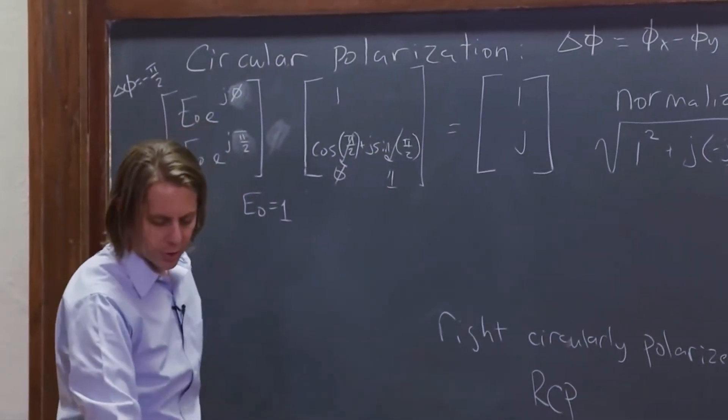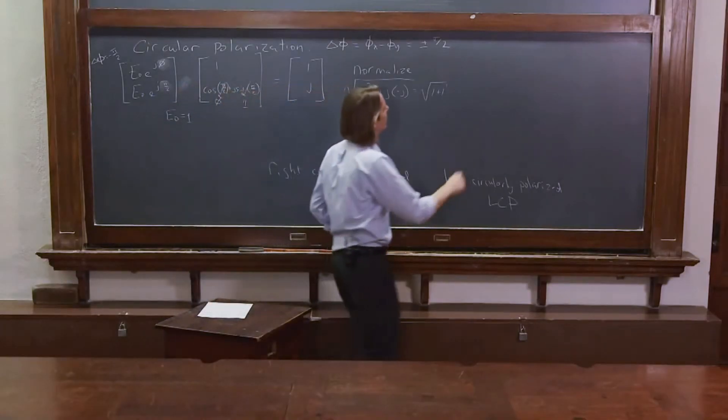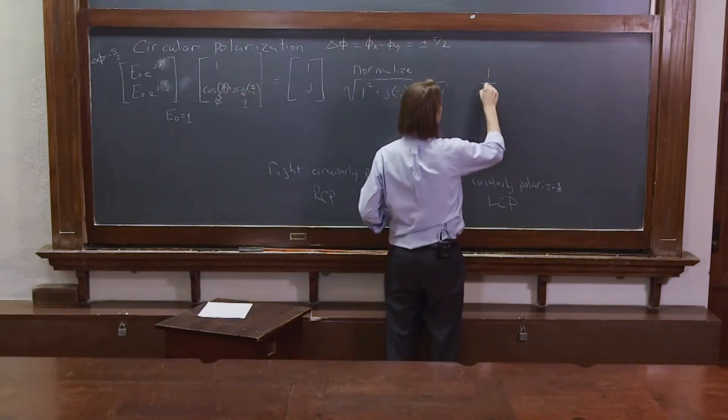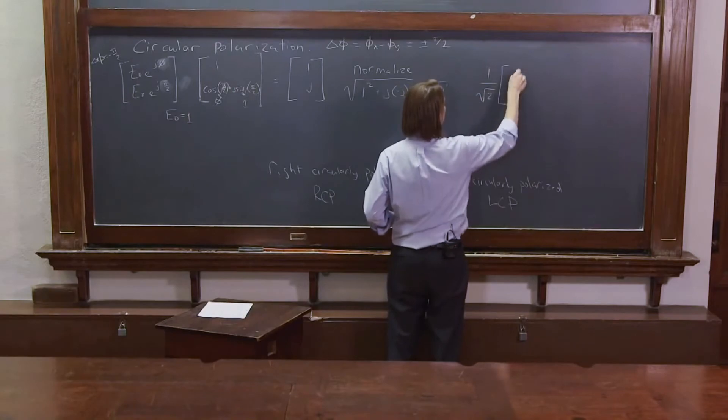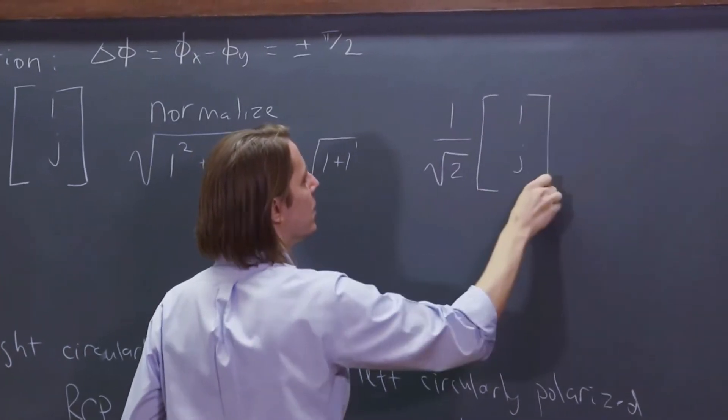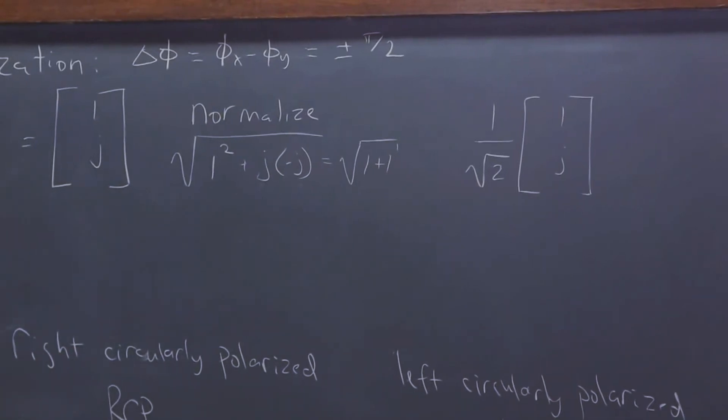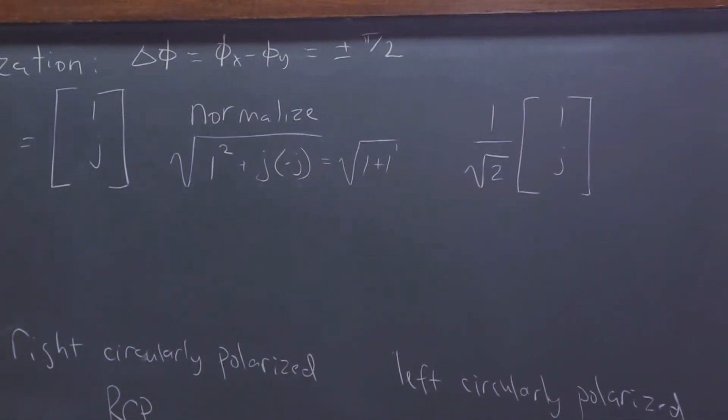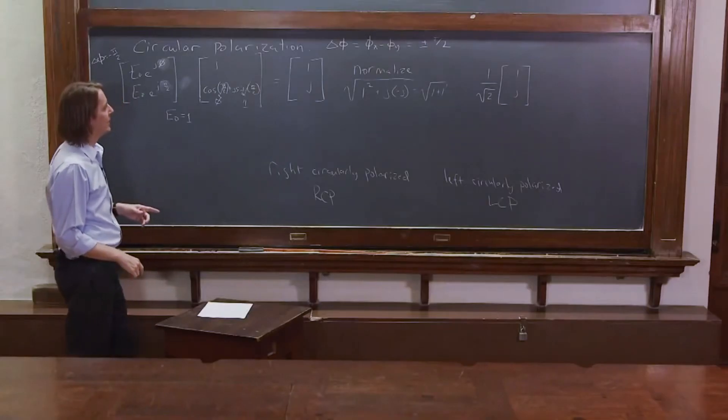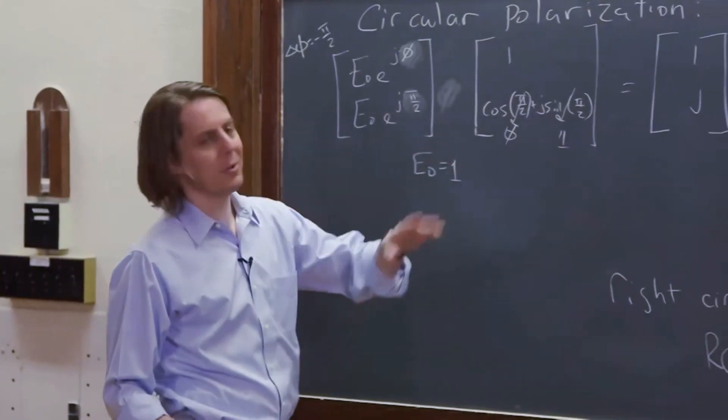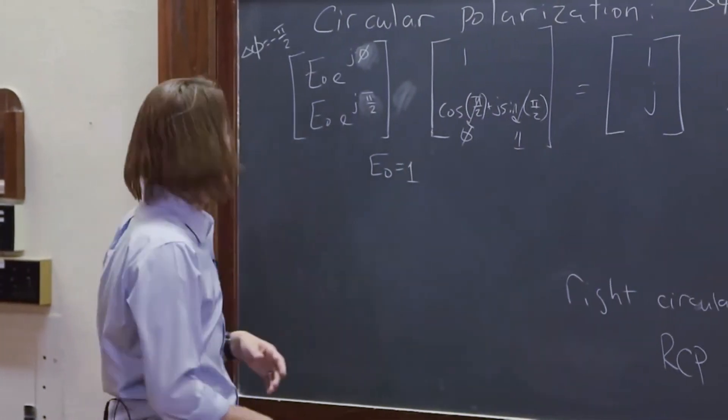Square root of 2. So to normalize it, we have to say 1 over square root of 2 times 1 over j. So it's 1 over the square root of 2, 1 over j, like that. That is the proper Jones vector for circularly polarized light when phi x minus phi y equals minus pi over 2.